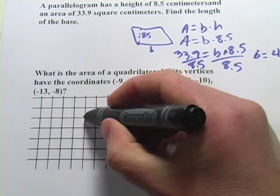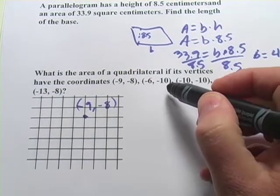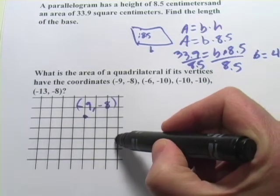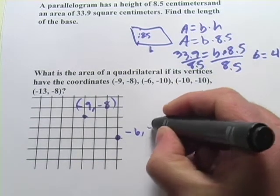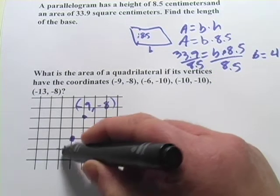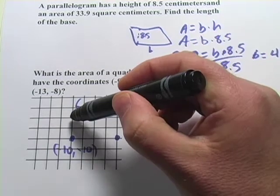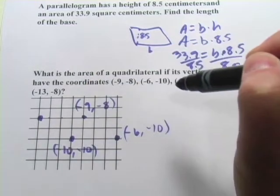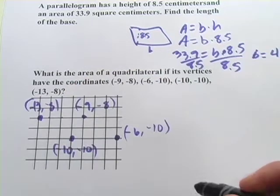Let's try that first. Let's say that this is the point negative 9, negative 8. And then we have negative 6. So this would be negative 8, 7, 6, and 10 would be right there. Okay, it's negative 6, negative 10. Then we've got negative 10, negative 10. So that's right there. And then negative 13, negative 8. Okay, so there's our 4 points.